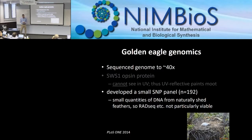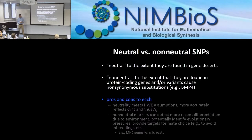We sequenced the genome of the golden eagle for a variety of reasons, but in part to develop a small SNP panel — in this case 192 SNPs — that could be used to DNA fingerprint naturally shed feathers. Those feathers could then be assigned to individual birds, the birds to populations, allowing demographic modeling of turnover and monitoring the same birds over time.